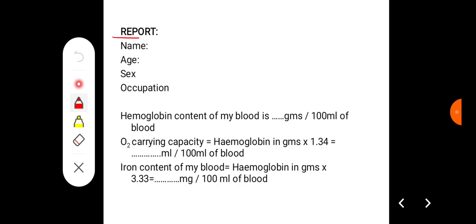The report has to be written like: hemoglobin content of my blood is, for example, 15 grams per 100 ml or deciliter of blood. Oxygen carrying capacity equals hemoglobin in grams times 1.3, that will be so many ml per 100 ml of blood. Iron content of the blood can be calculated: hemoglobin in grams times 3.34 equals so many milligrams per 100 ml of blood.